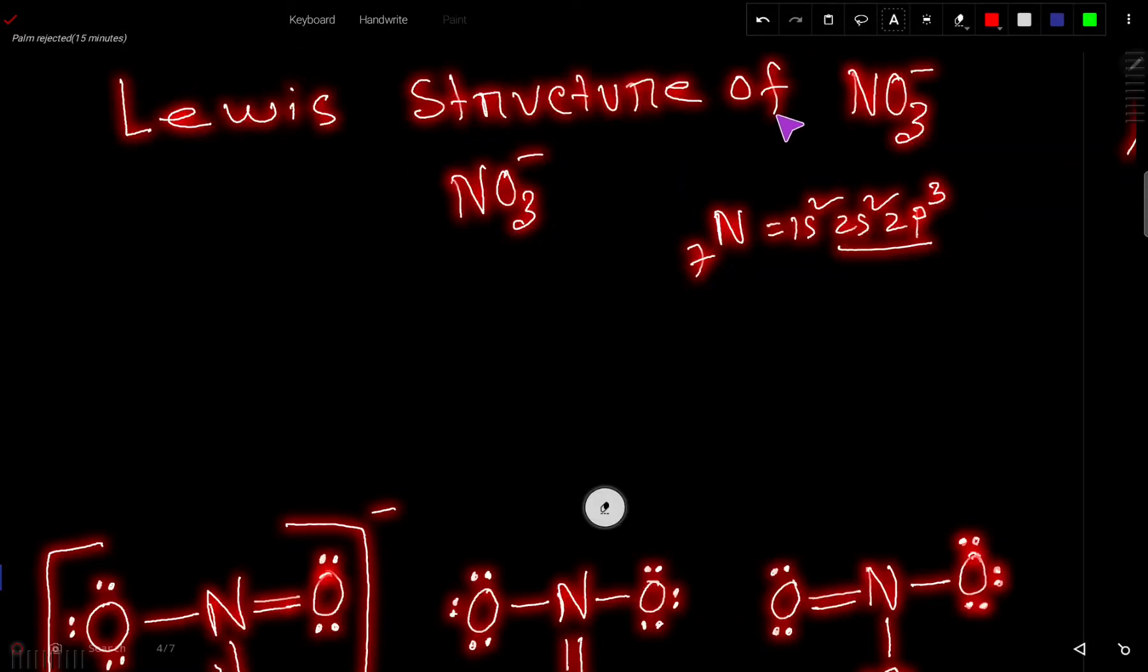Lewis structure of nitrate ion or NO3 minus ion - how to draw the Lewis dot structure for NO3 minus ion or nitrate ion. At first we have to find out the valence electron for nitrate.